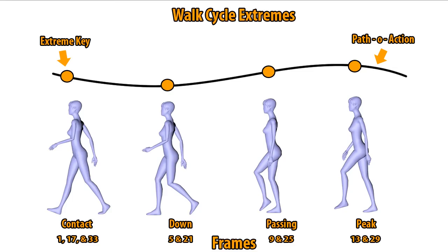Above these images, we find a curve that is called our path of action. There are going to be similarities between this curve and our position y-axis in our f-curve manager, so let's look for that. And then below, we find the frames that these poses should land on.